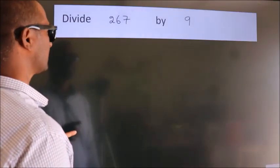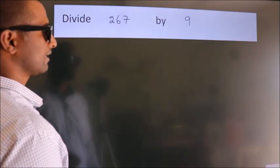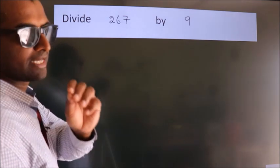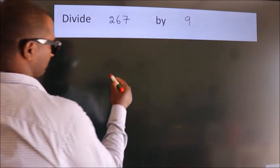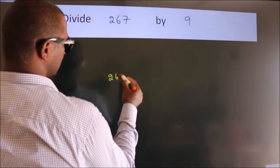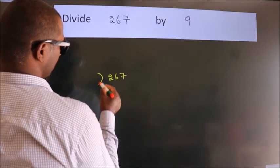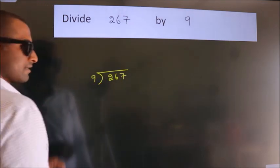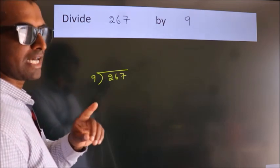Divide 267 by 9. To do this division, we should frame it in this way: 267 here, 9 here. This is your step 1.